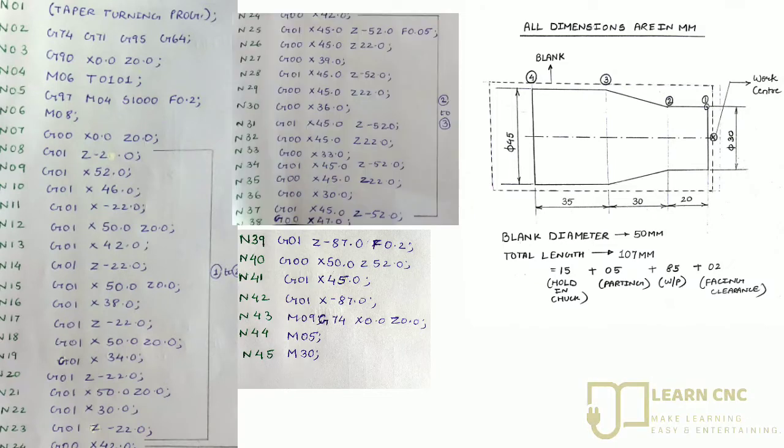Just before starting the program, remember that we have taken the facing clearance of 2mm. So while taking any length, we have to consider this 2mm and add 2mm in the length. For example, while traveling 30mm, we have to take 32mm. While traveling 50mm, we have to take 52mm. And while traveling 85mm, we have to take 87mm. So the total length of the workpiece is 85mm, so we have to travel 87mm to complete that.